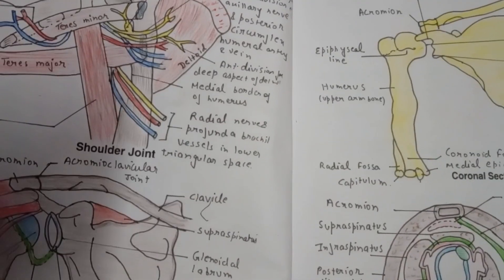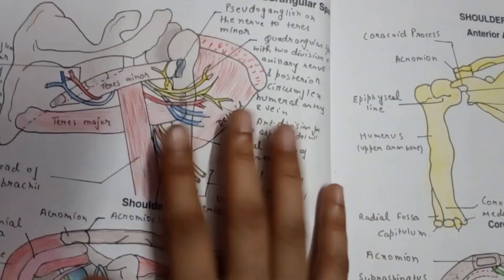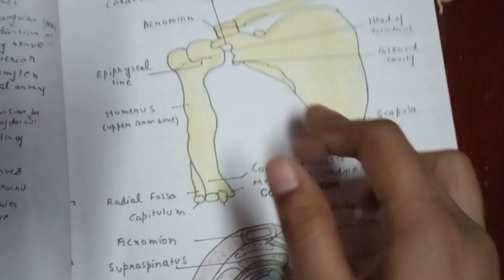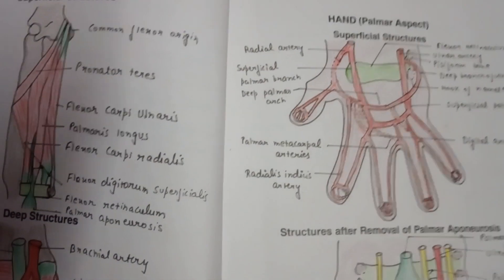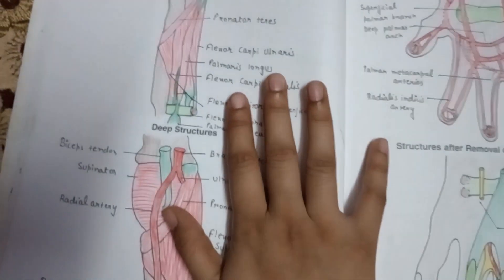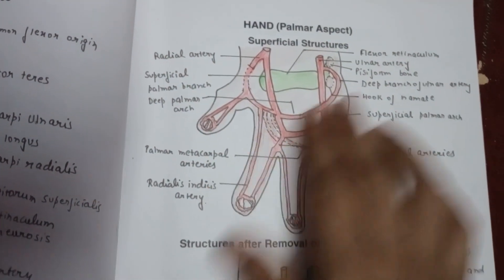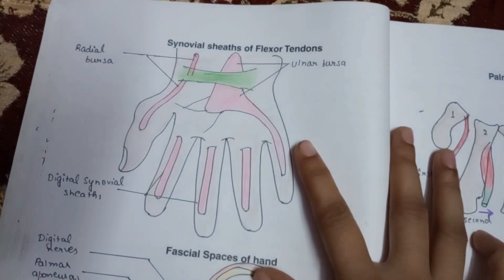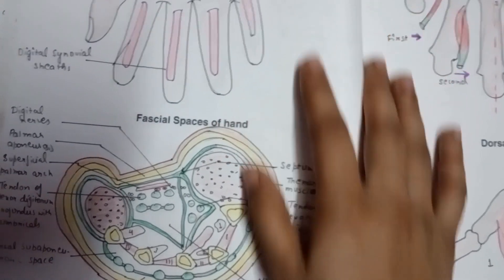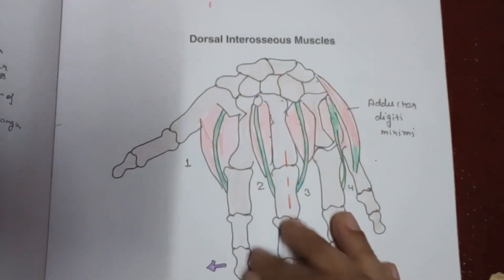In an exam, suppose there is a long answer question about your scapula — you can make these diagrams. After scapula, the cubital fossa is also very important. In the case of forearm, these are the muscles. In the case of hand, the palmar aspect and structures after removal of palmar aponeurosis. This is the synovial sheaths of flexor tendons and fascial spaces of hand, palmar interossei muscles, and dorsal interossei muscles.